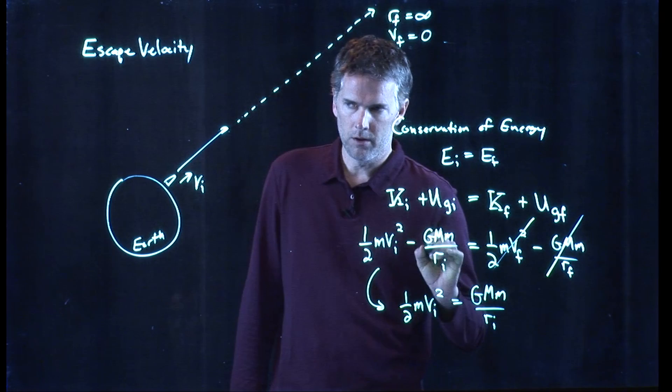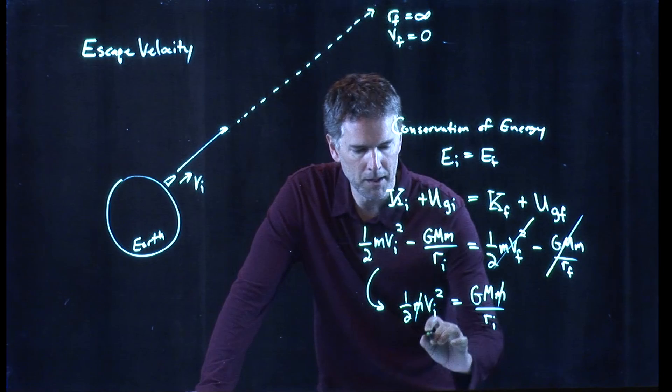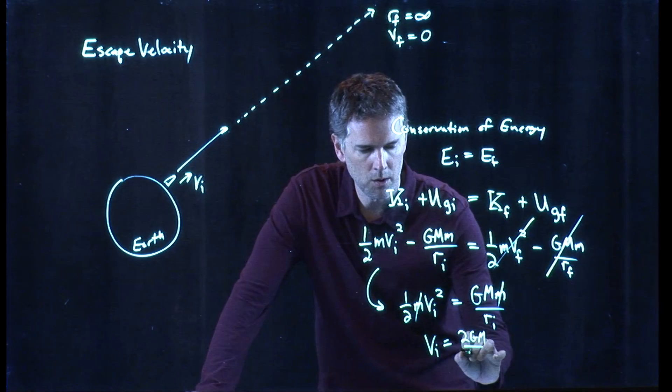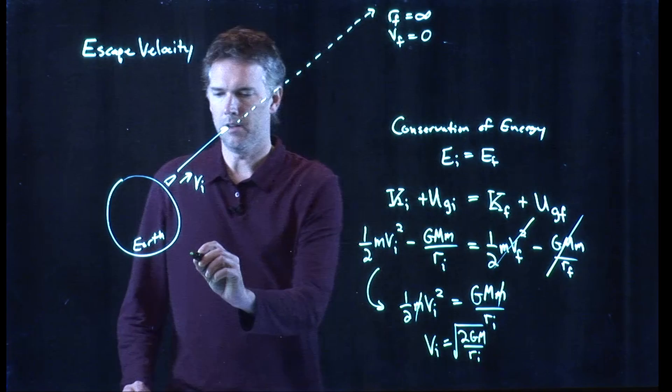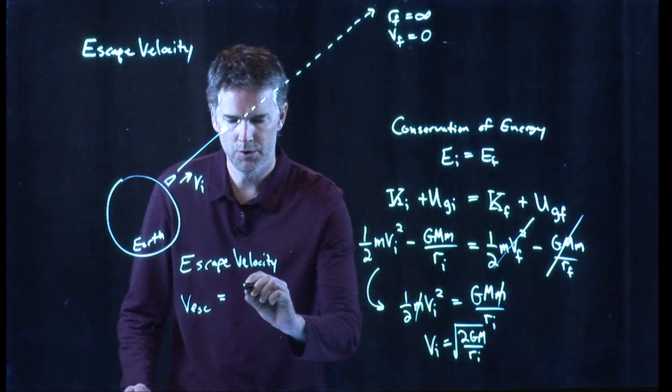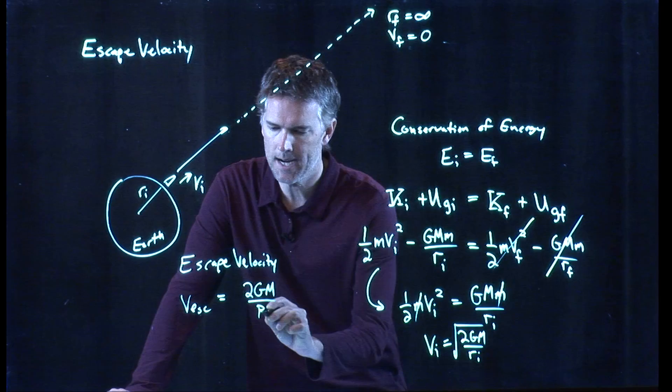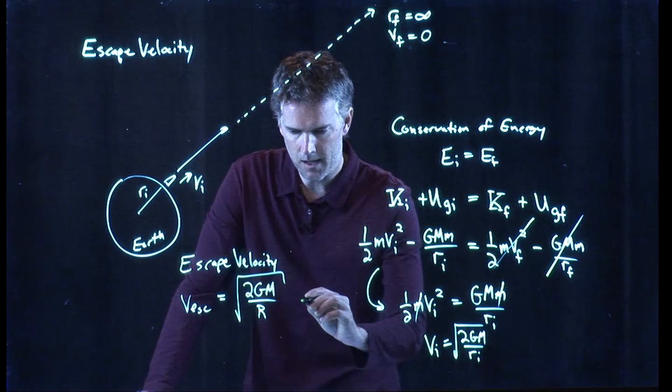One half M VI squared has to be equal to GMM over R sub I. And this thing is what we call escape velocity, this VI. And we can solve this equation for VI. What do we get? The little m's drop out. We multiply by 2 and we take the square root and we get 2GM over R sub I and we take the square root. And this is escape velocity. V escape is 2GM over R sub I, but R sub I is this. And so that is the radius of the planet and we take the square root.